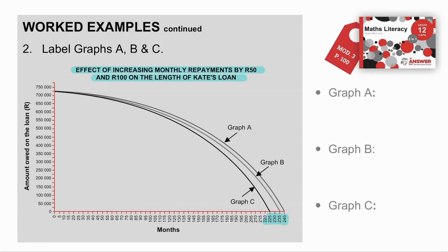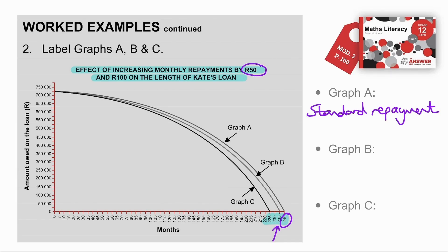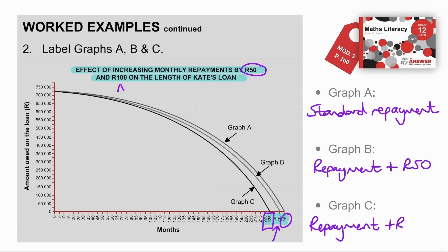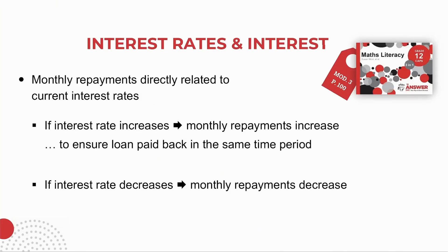Looking at the graphs: Graph A shows the full term of the loan, so it would be labeled the standard repayment amount. Graph B shows that the length of the loan has decreased by five months, meaning she is putting in a little extra per month — an extra R50. So this would be labeled repayment plus an extra R50. Graph C is the shortest repayment loan, where she has put in an extra R100, labeled repayment plus R100.